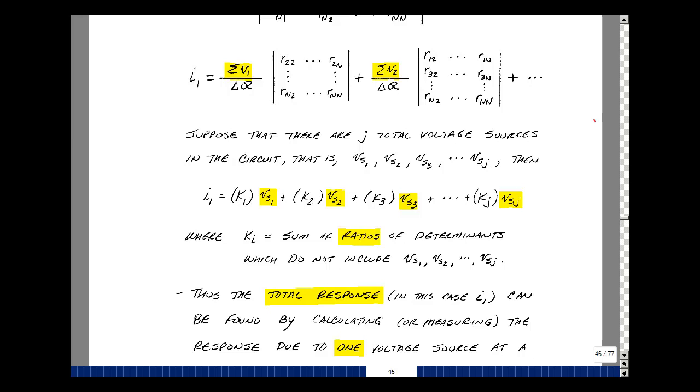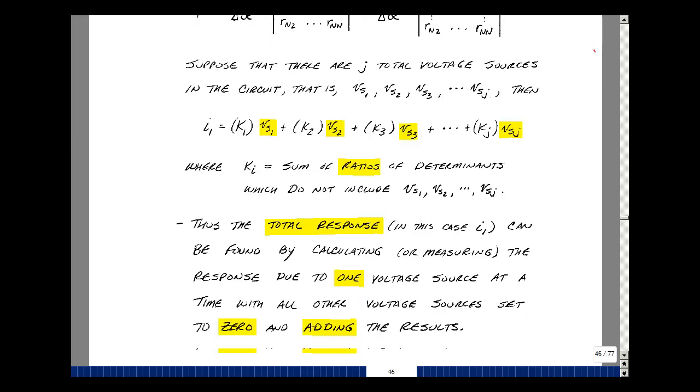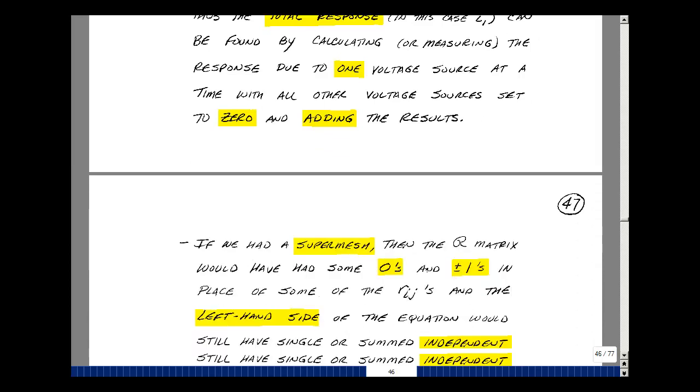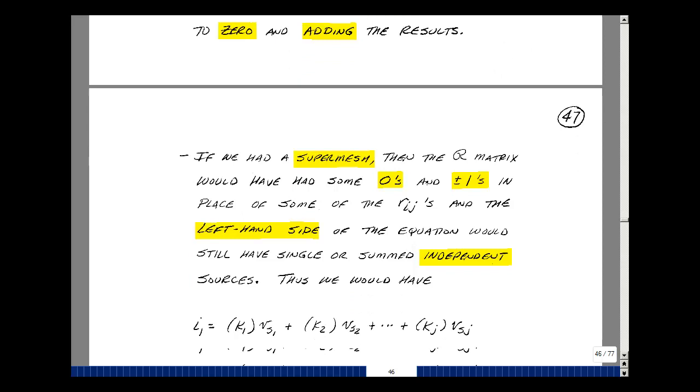Suppose that we had current sources. Well, then we would have to write a series of Kirchhoff's current law equations to go with our Kirchhoff's voltage law equations. If we had a super mesh, or if we had a current source in an outer mesh, it would be a row with plus or minus 1s and 0s in it. The left-hand side of the equation would just be the current source that's in that mesh or between two meshes.